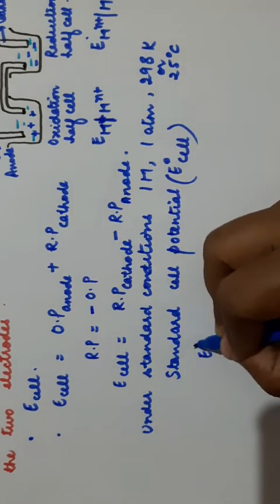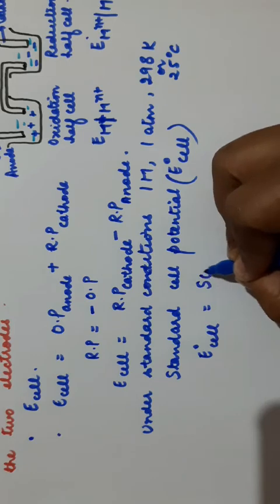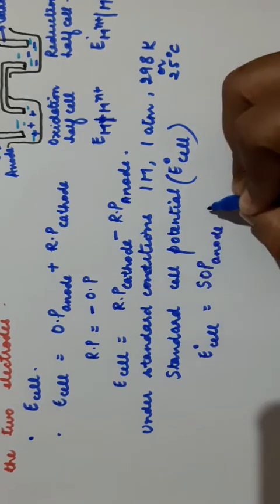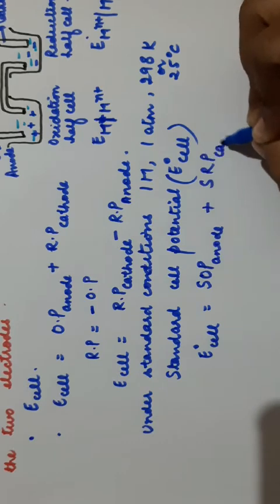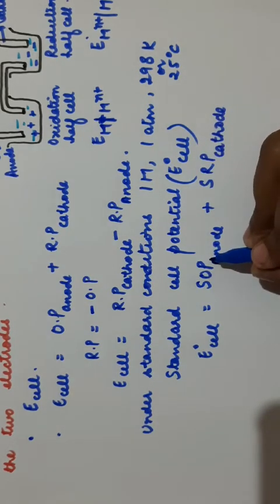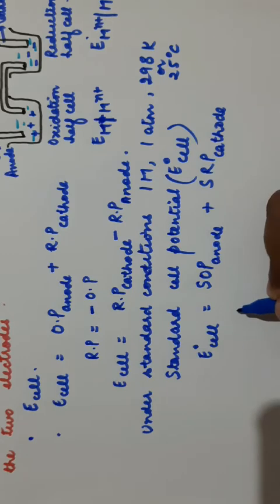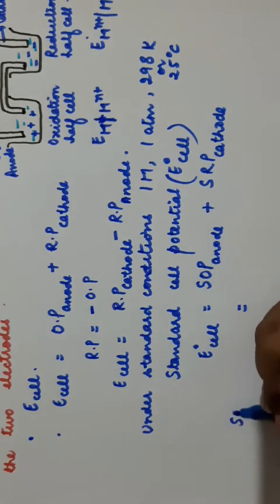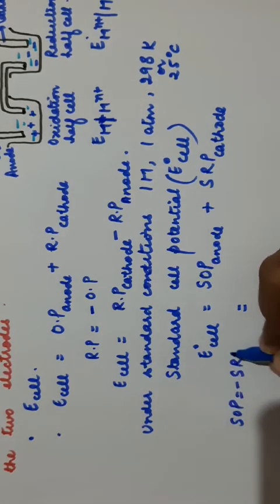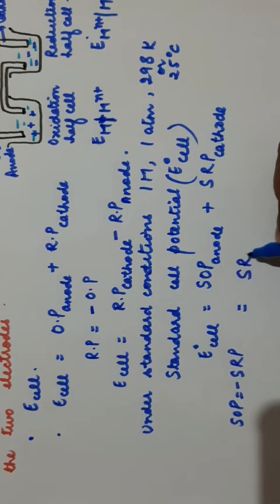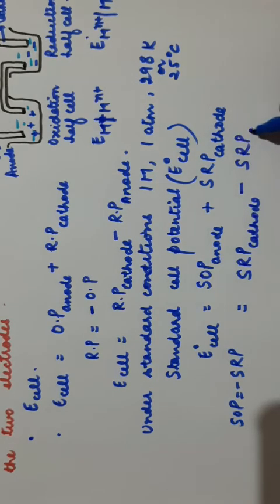E naught cell is equal to standard oxidation potential of anode plus standard reduction potential of cathode. Since the values are given in terms of reduction potential in most cases, standard oxidation potential equals minus standard reduction potential of anode. So the formula becomes: SRP of cathode minus SRP of anode, or E naught of cathode minus E naught of anode.